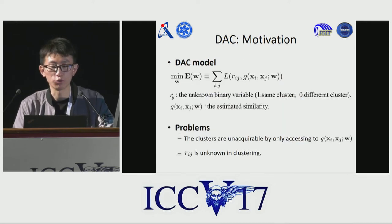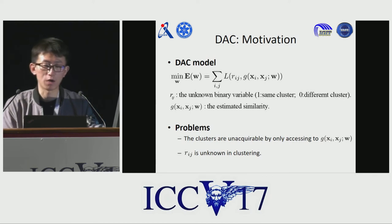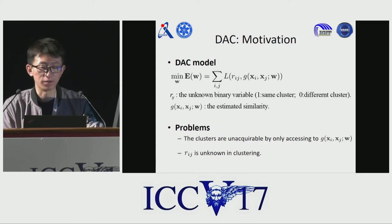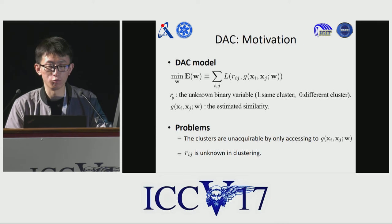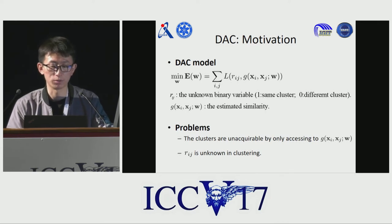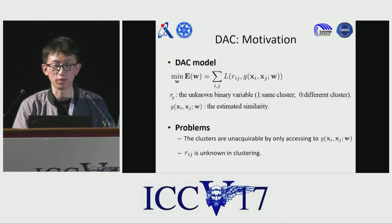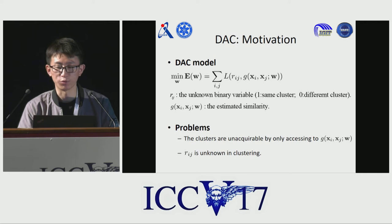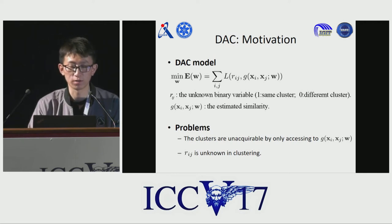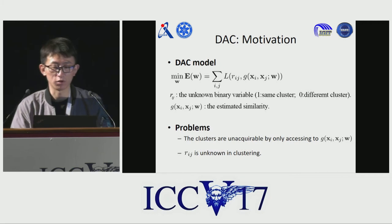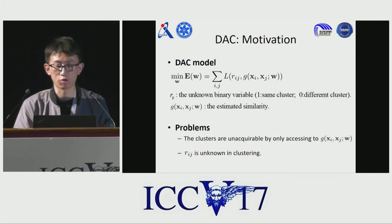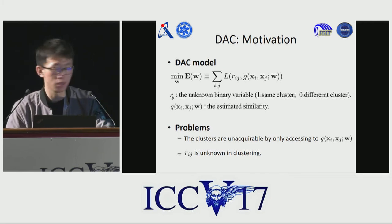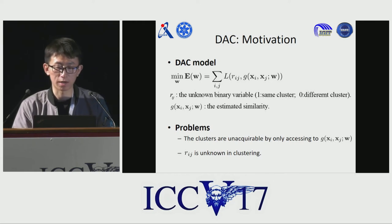Therefore, we can model to study similarities between pairwise samples. R is an unknown binary variable: one means that two samples belong to the same cluster, and zero means they come from different clusters. The function f is used to fit the similarities between different samples. Generally, two problems need to be addressed. First, the clusters of xi and xj are unknown, but only their similarities. Second, R is unknown in the clustering process.